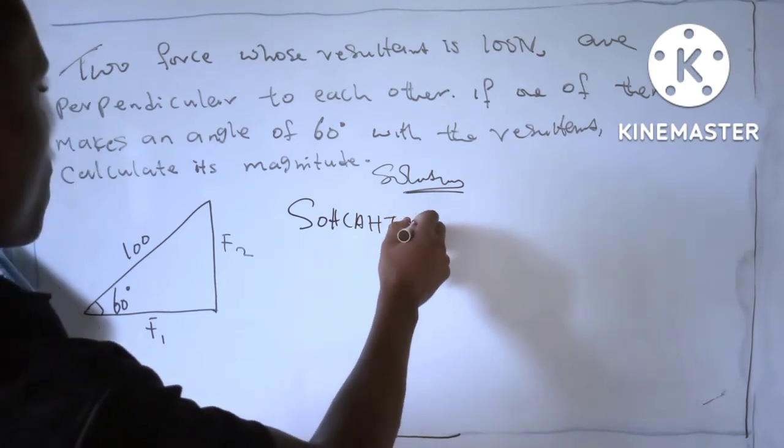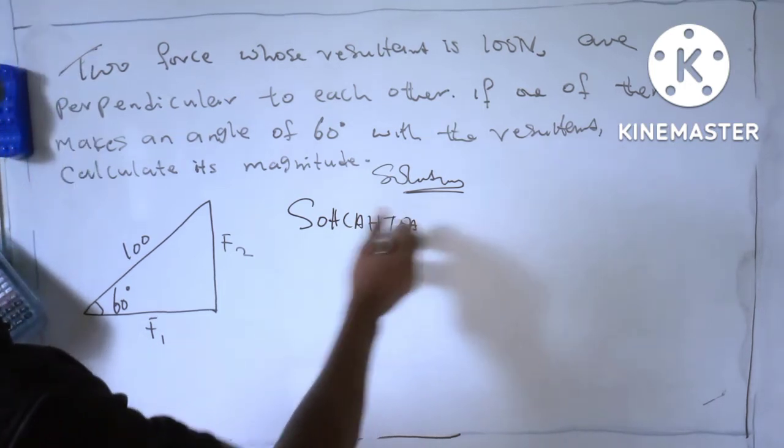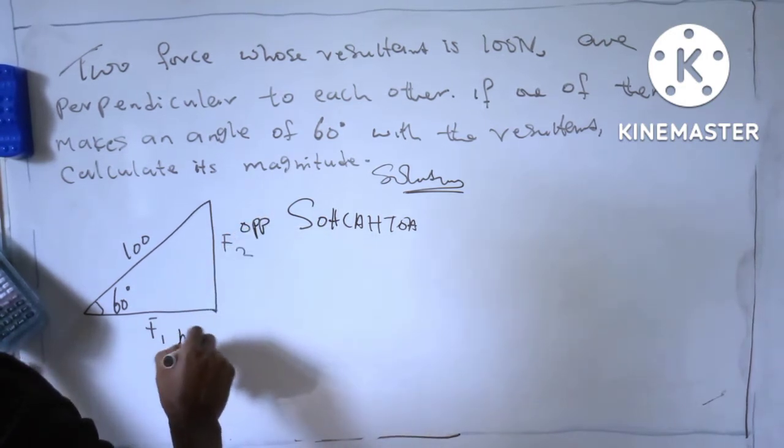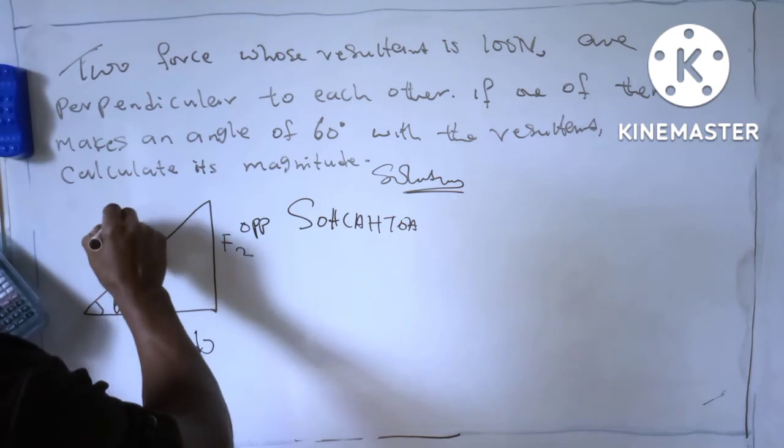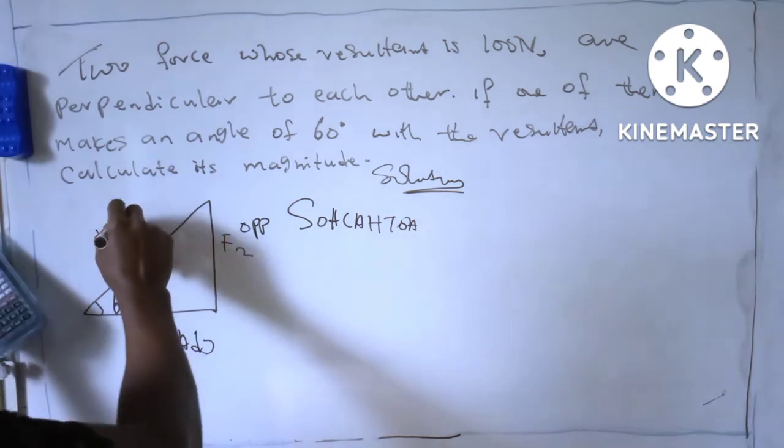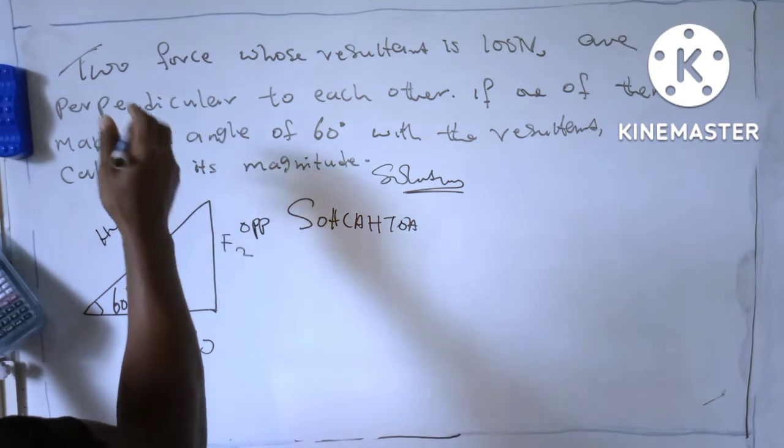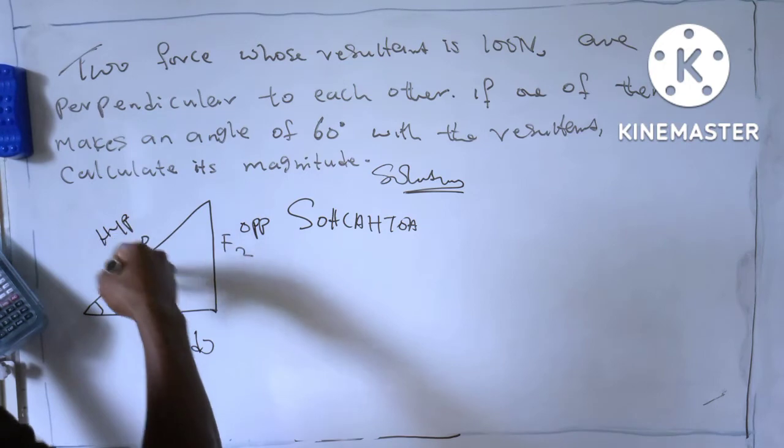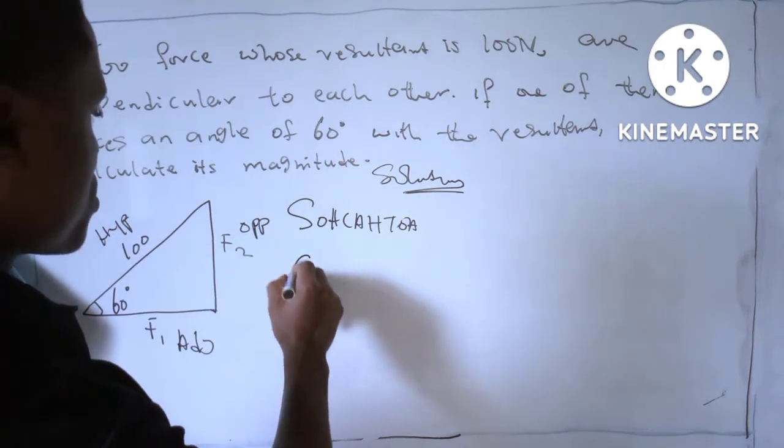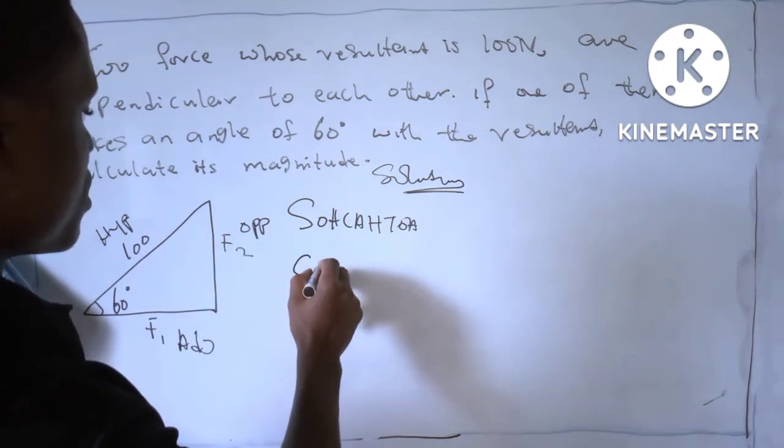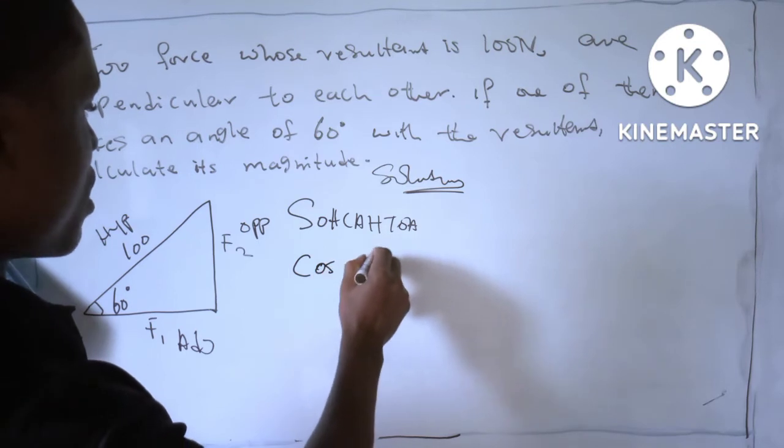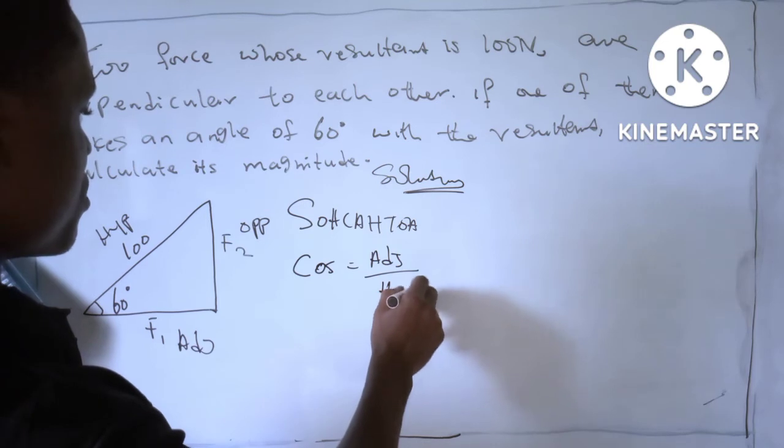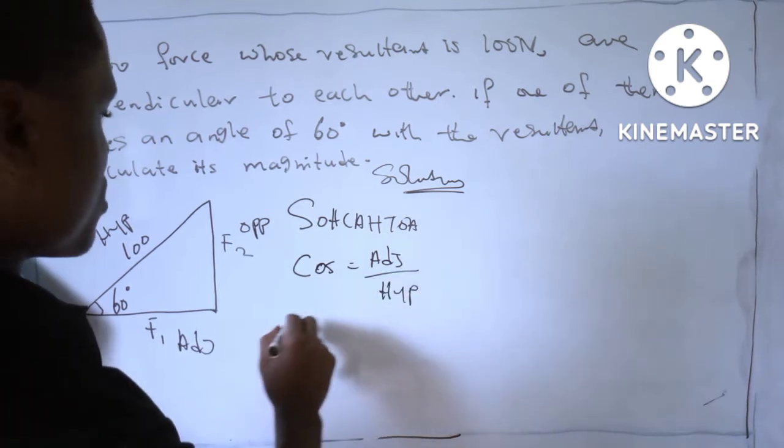Here is the opposite, here is the adjacent, and here is the hypotenuse. We are going to use adjacent over hypotenuse, which is cosine. Cosine equals adjacent over hypotenuse.